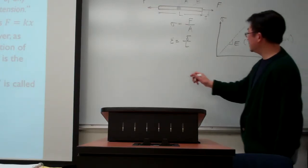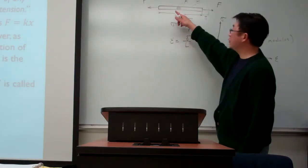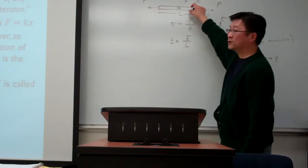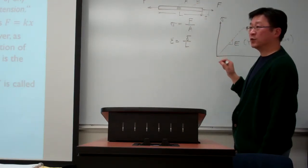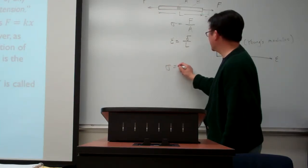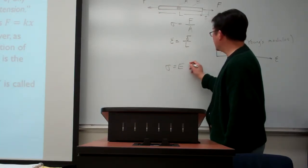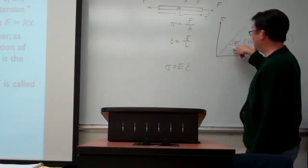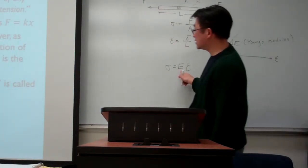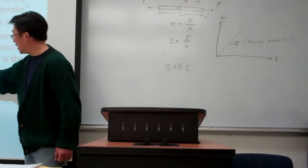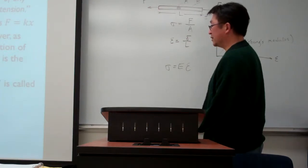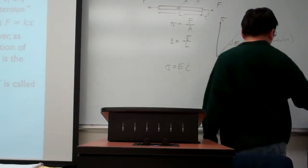The slope is defined by Young's modulus. For the one-dimensional case, we don't consider the induced deformation in the lateral direction, which means we don't consider the Poisson's ratio. So under this situation, stress equals E multiplied with strain. That is the one-dimensional Hooke's Law — very straightforward. Here E is called the Young's modulus.